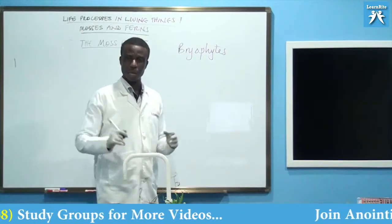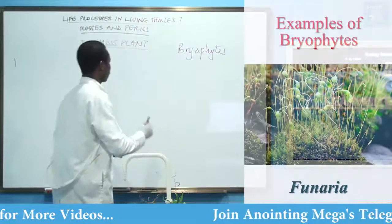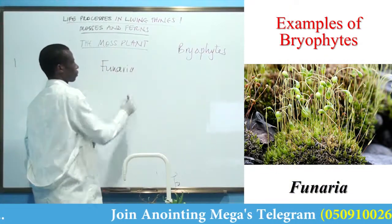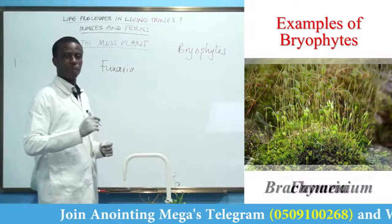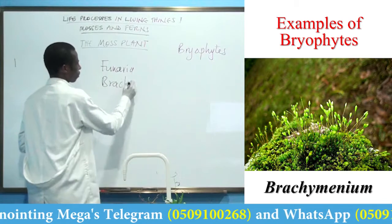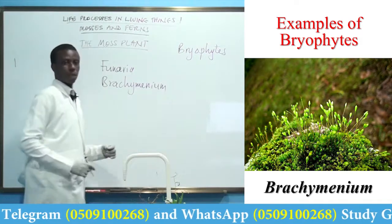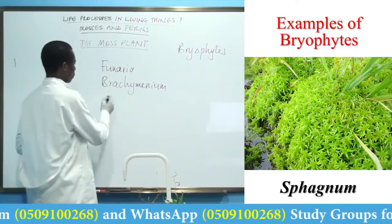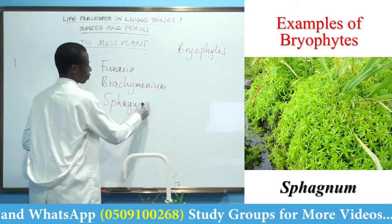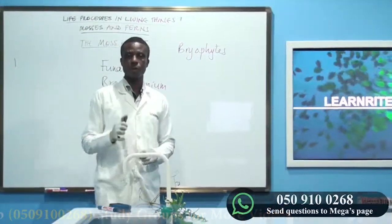What are the examples of moss plants? For your examination, we have funaria, brachymenium, and sphagnum. These are examples of bryophytes.